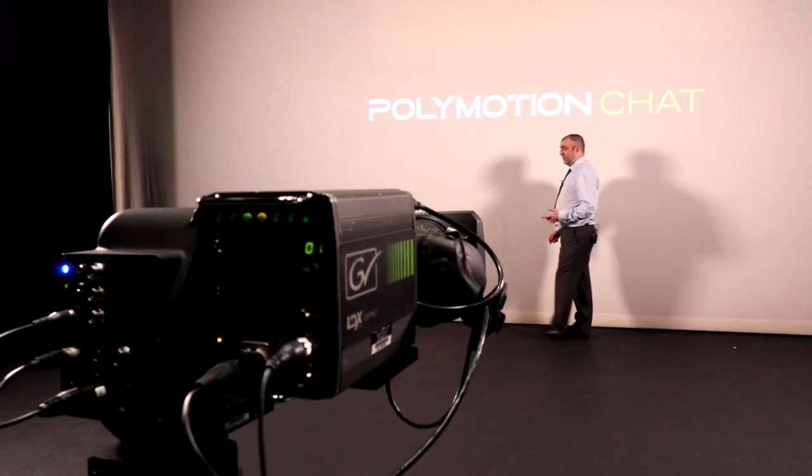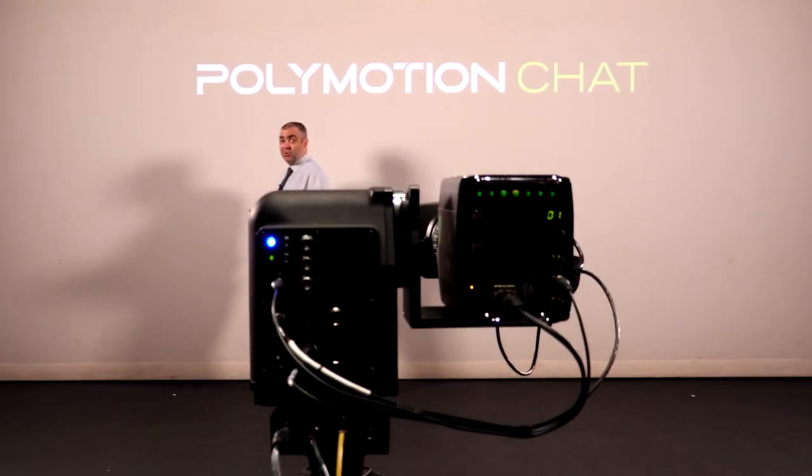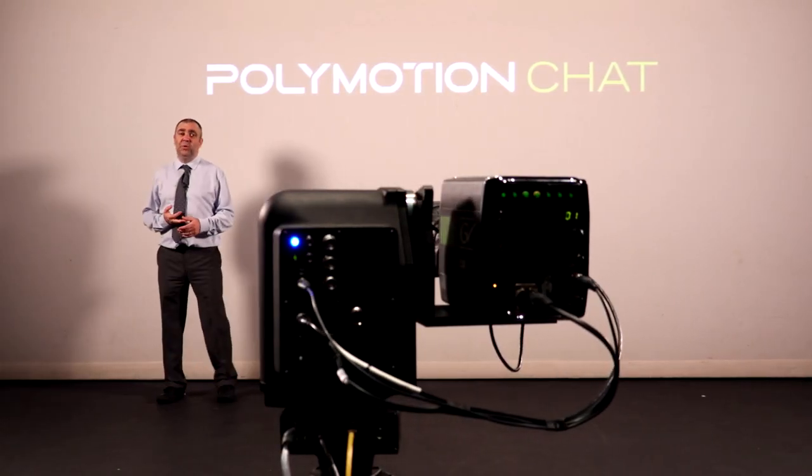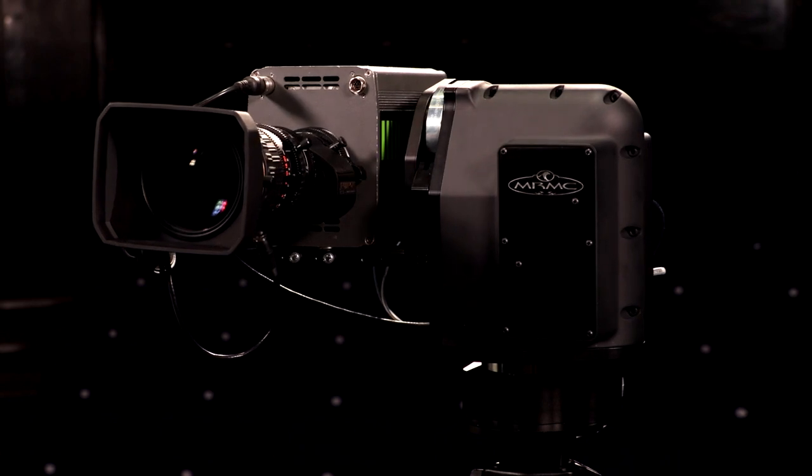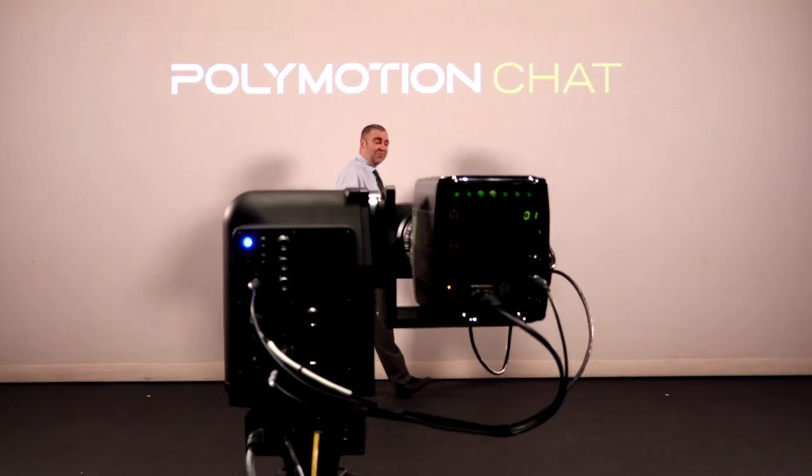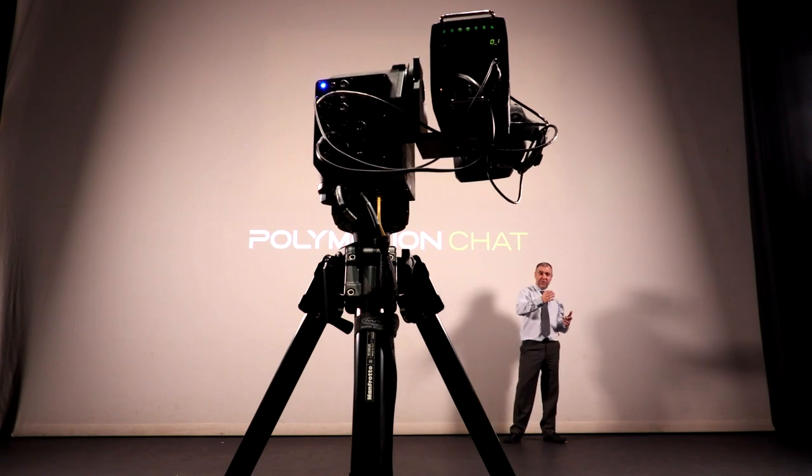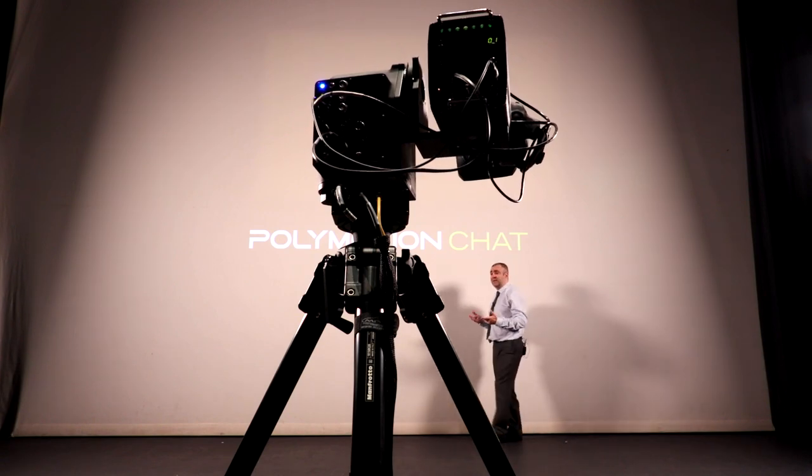Polymotion Chat can be used in a number of different environments. You can use it in a small studio environment, you could deploy it for news gathering with an SNG truck. In this case, we're running it in a presentation format. As you can see, the camera is actually following me around. It's completely automated.